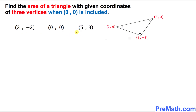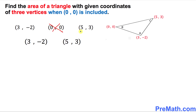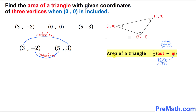Here is our final example. Similarly, we have been given three vertices and one of them is zero zero, so once again we simply throw away this zero zero and we end up with just these two remaining points. We're going to use this formula to find the area of the triangle. Our exterior points in this case are three and three, and our interior points are negative two and five.